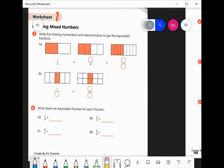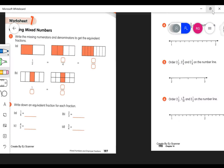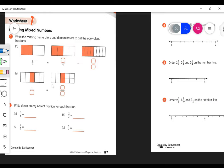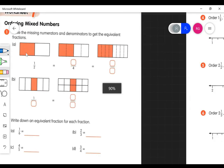Okay, so we're here on page 197, and it says to write the missing numerators and denominators to get the equivalent fractions. So let's go ahead and try that.